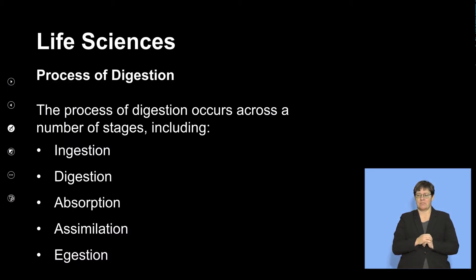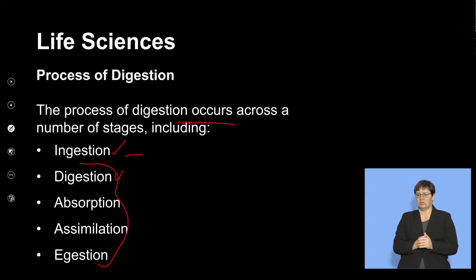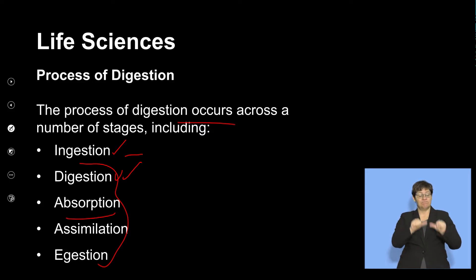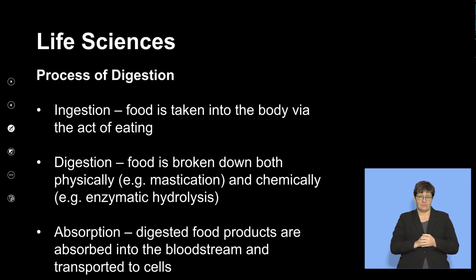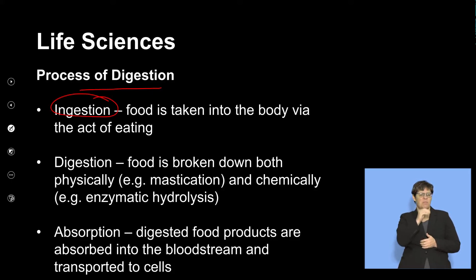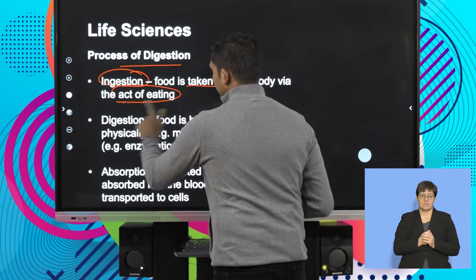The process of digestion occurs across a number of stages, including ingestion and digestion, which we spoke about earlier. Followed by digestion is absorption. We then assimilate and remove unwanted waste products. The act of taking in food through the mouth is called ingestion — that is eating food.